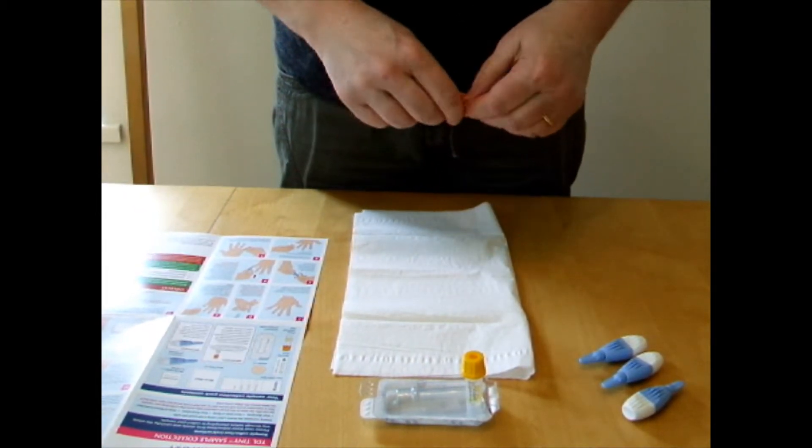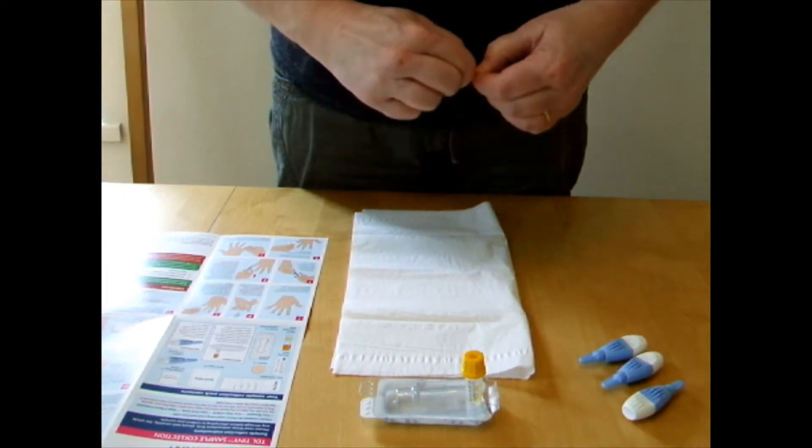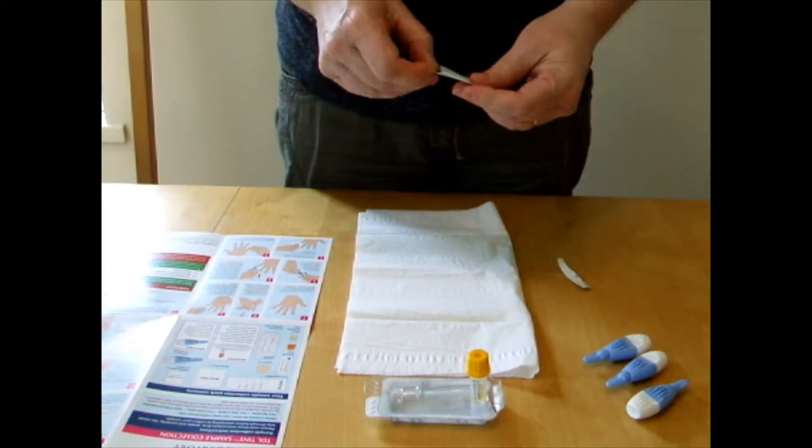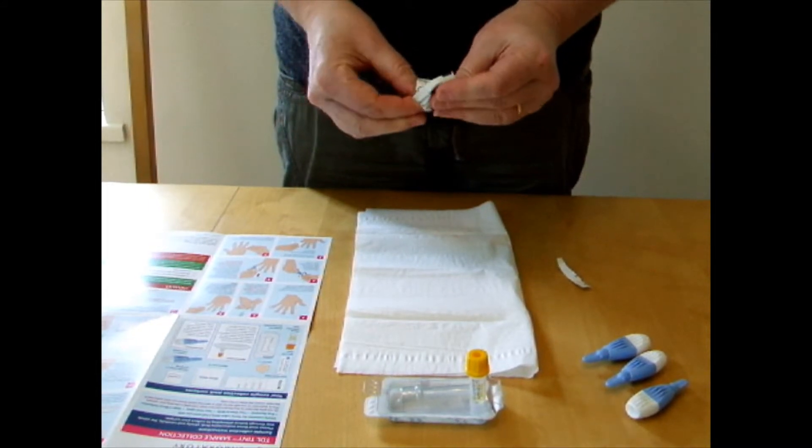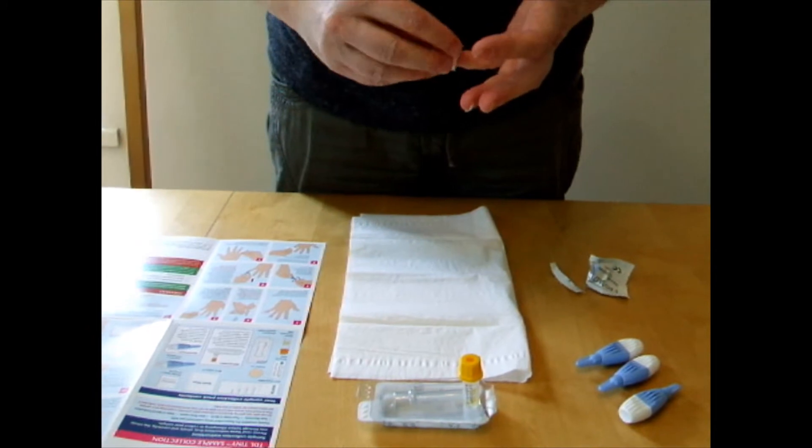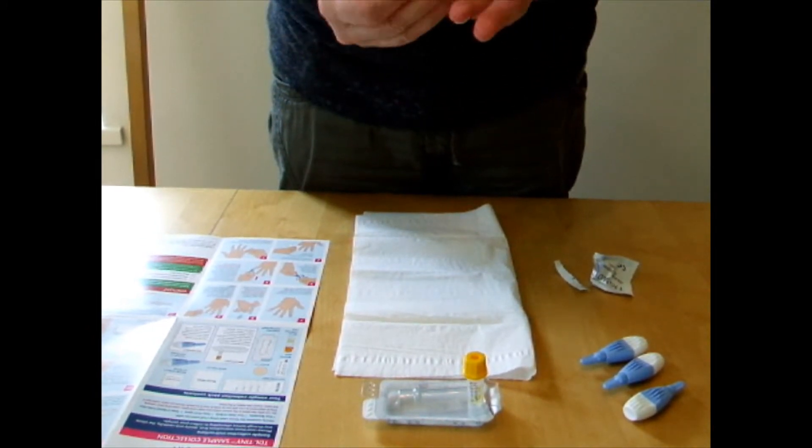You also have a wipe which has got alcohol in to make sure your fingers are clean. Wash your hands first, make sure your hands are warm because it will make it much easier to get the sample. If you stand up it's also easier to get a blood sample.